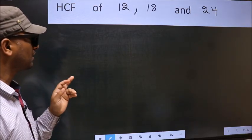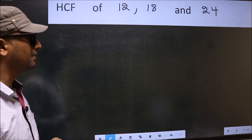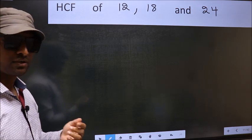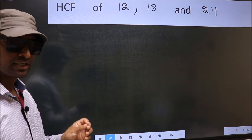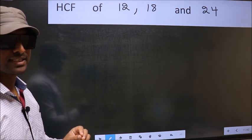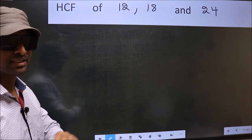HCF of 12, 18 and 24. To find the HCF, first we should do the prime factorization of each number separately.